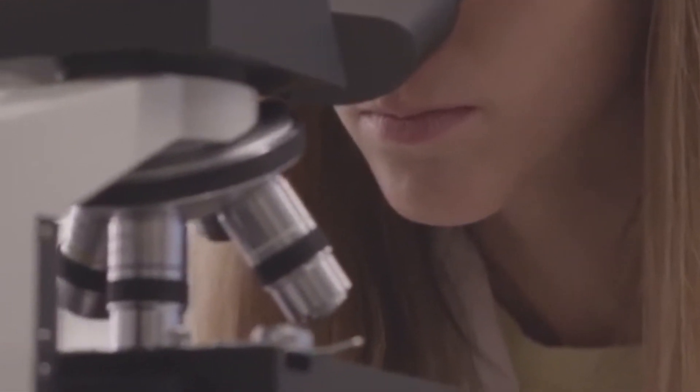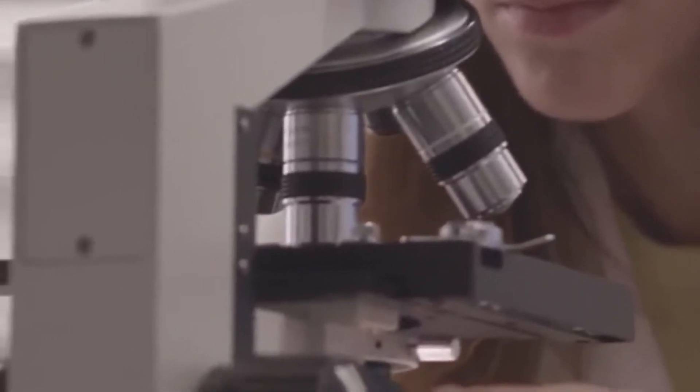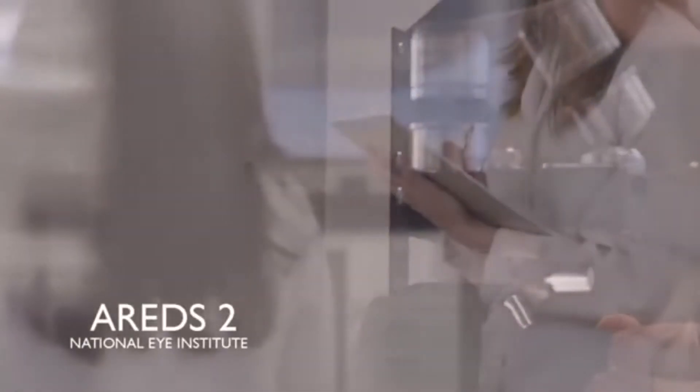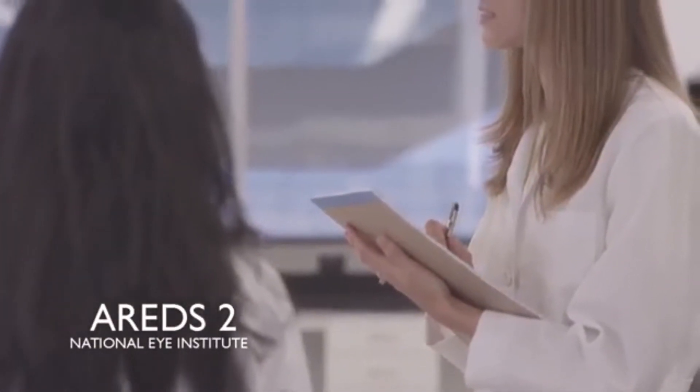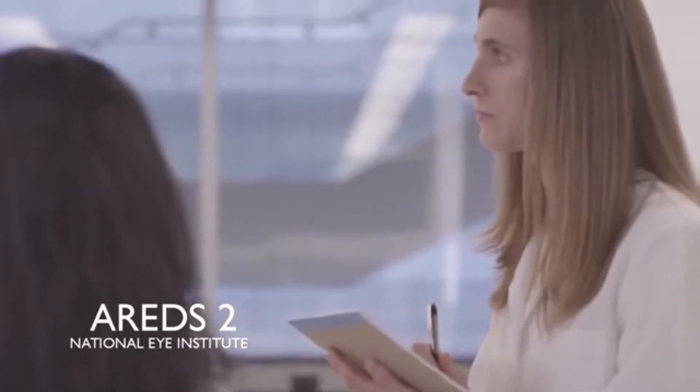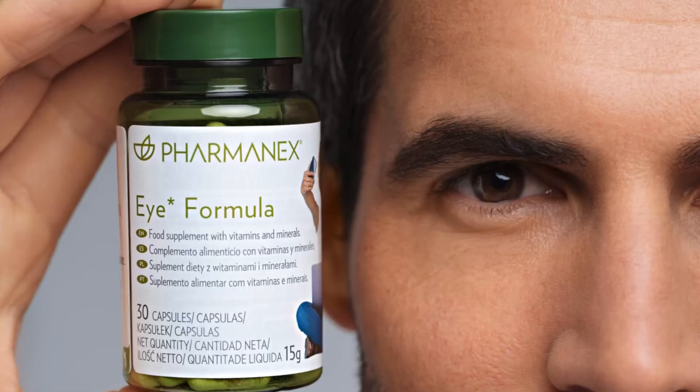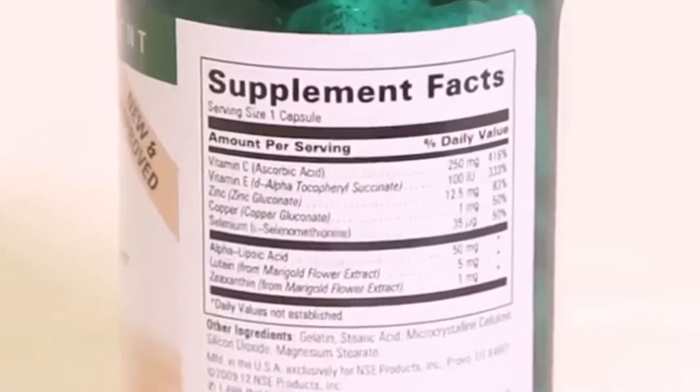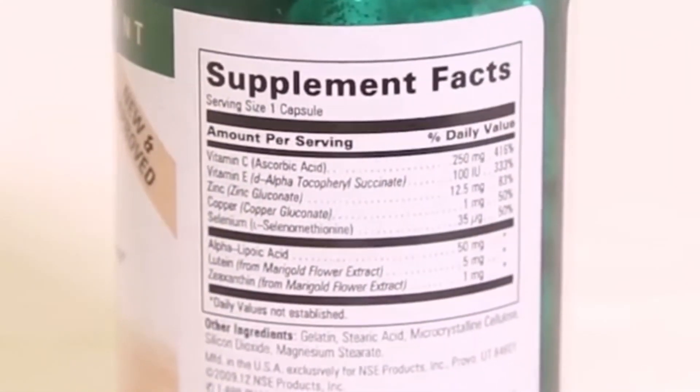Based on the positive results of this study, a trial known as AREDS-2 was launched with some modifications to the original AREDS formulation. This included adding lutein, zeaxanthin, and omega-3 fatty acids while decreasing the amount of zinc. The updated eye formula now includes all the clinically effective doses of vitamin C and E, including lutein, zeaxanthin, zinc, and copper.